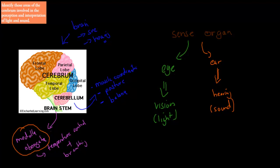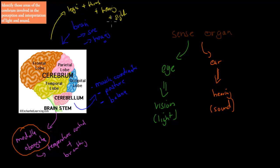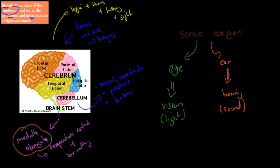The cerebrum is again the vast majority of the brain. This is where we have our logic and thinking, especially in the frontal part. This is also where hearing and sight happen, among quite a few other things. The specific dot point asks us to identify which areas of the cerebrum are responsible for the perception and interpretation of light and sound — basically where we pick up and interpret light and sound.